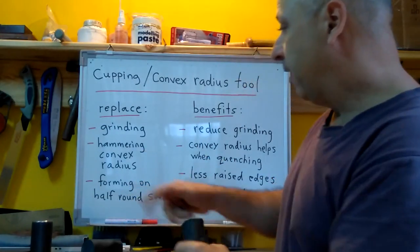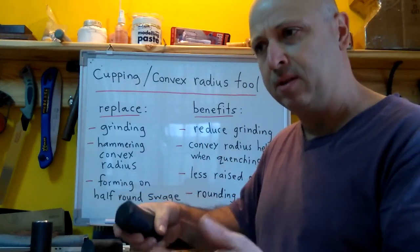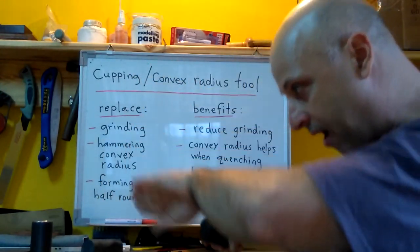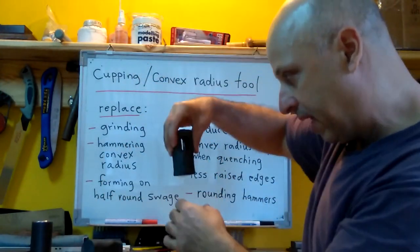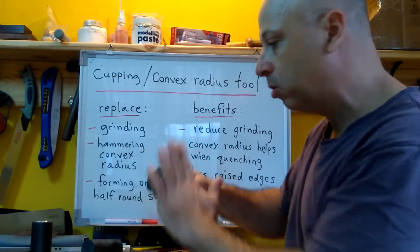So I want to replace that or forming on a half round swage. And like I said my anvil also has swage functions and I'll turn it on the side where the larger half round is, I would put that in it and hammer, and then rotate it 90 degrees.